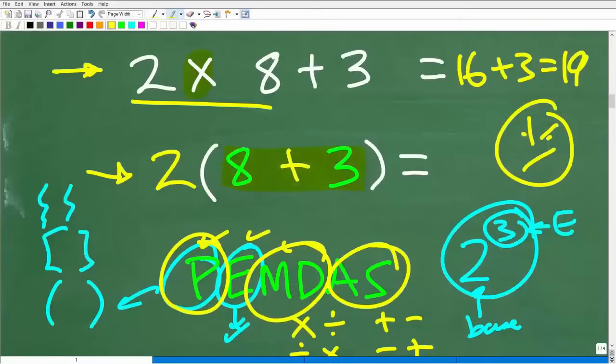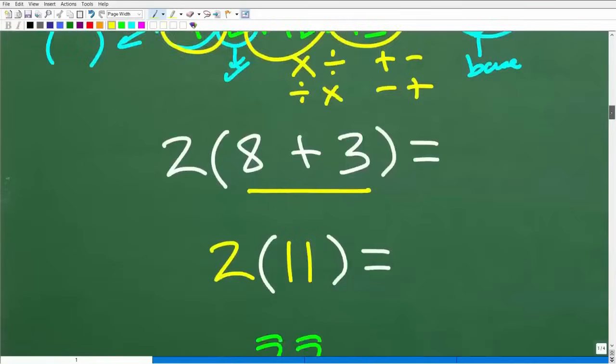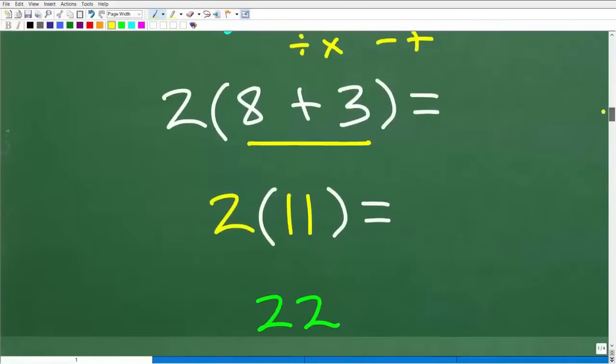This is the problem we need to do. We got to do the parentheses first. So we got to go here. Eight plus three, which of course is 11. But let's go ahead and just play out the rest of this problem, taking one step at a time. So eight plus three, of course, is 11. And then two times, there's nothing more to do inside the parentheses. So we're just left with this last operation. Two times 11, of course, is 22. So there you go.